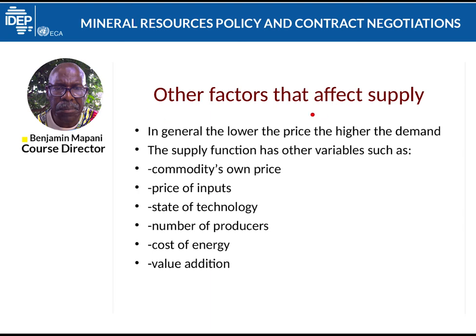The lower the price, the higher the demand. Supply is always a function of other variables: the price of the commodity, the price of inputs, the state of technology. With very good technology we can reduce prices. Also, the number of producers on the market matters — if you have more producers, the price is likely to go down; fewer producers means the price is likely to go up.